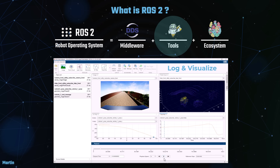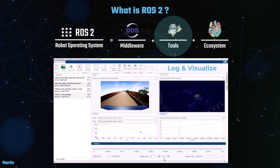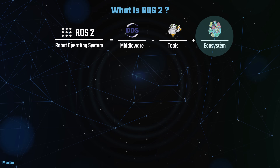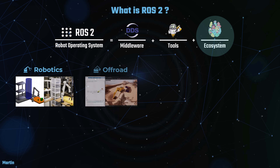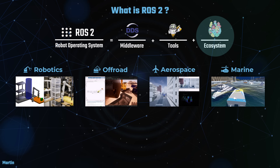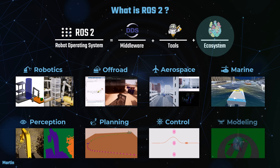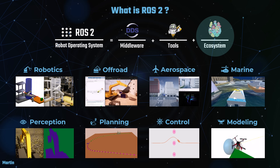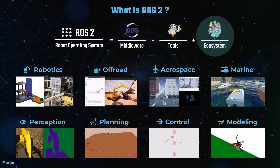ROS2 provides a comprehensive suite of tools designed to enhance development, debugging, and deployment processes. For instance, the logging and visualization tools enable developers to log and graphically represent data flows and system states, providing clear insights into the operation of complex robotic systems. The ecosystem of ROS2 includes a rich collection of libraries, community resources, and third-party integrations that together provide a robust foundation for building diverse robotic applications. Whether you're developing a manipulator, an off-road vehicle, aerospace systems, or marine robots, ROS2 offers the necessary tools and support, excelling in areas such as perception, planning, control, and modeling.